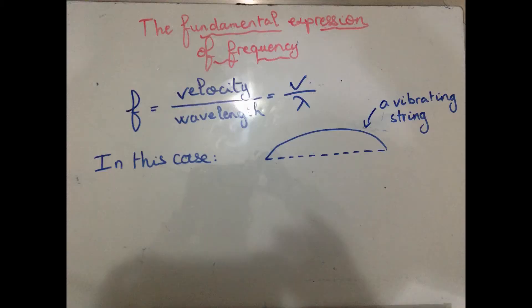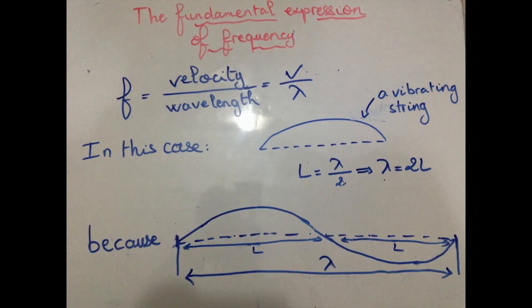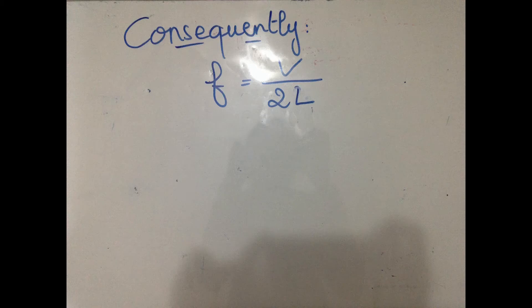The expression of the fundamental frequency is velocity divided by the wavelength. In this case, our vibrating string represents half of a full sine wave cycle. Therefore, the wavelength of a full cycle is twice the length L between the ends. So the frequency equals velocity divided by double the string length.